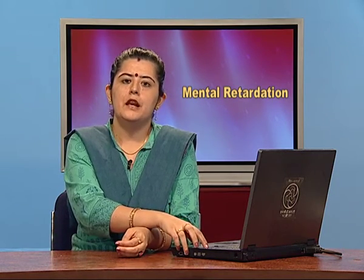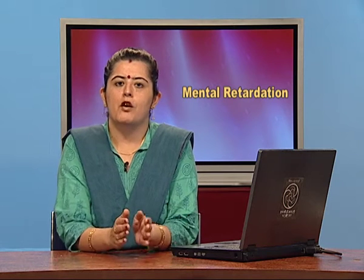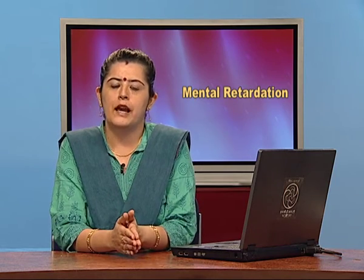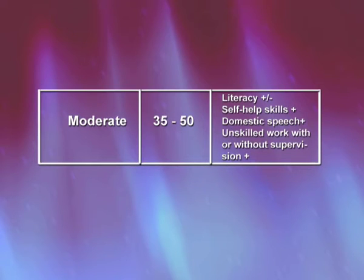Moderate mental retardation ranges from IQ 35 to 49. These people are normally able to study till first or second grade and are not able to go beyond that. We call them the trainable category. With self-help, they can manage partially but face problems and require constant supervision and guidance.